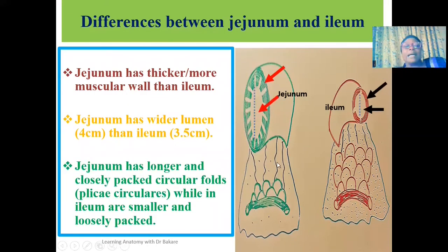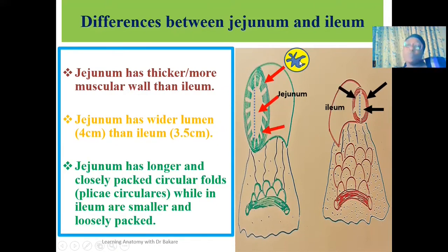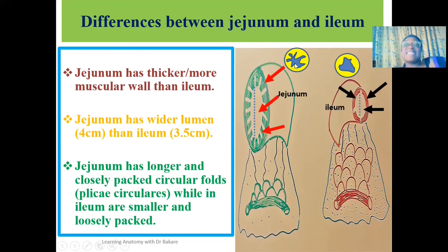The jejunum also has longer and more closely packed circular folds, which are the plicae circulares. These circular folds in the jejunum appear longer and more closely packed, creating more infoldings within the mucosal wall. In the ileum, the circular folds are shorter and loosely packed, so the infoldings are less pronounced compared to what is seen in the jejunum.